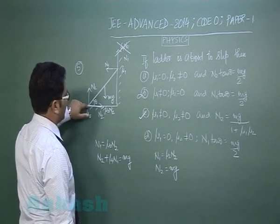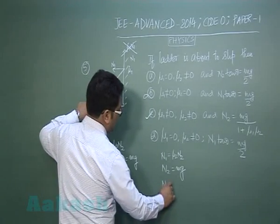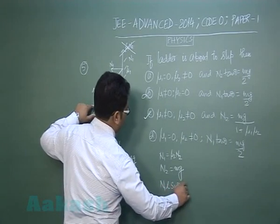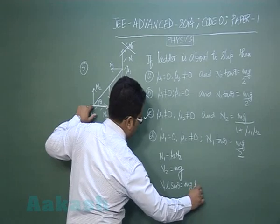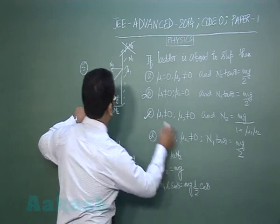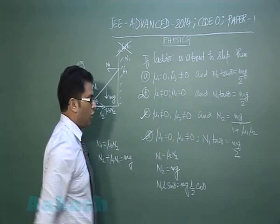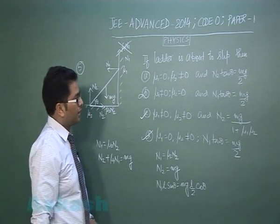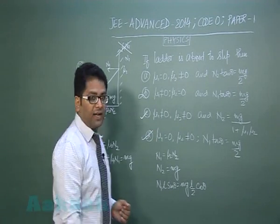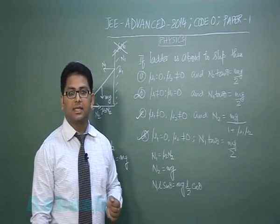And let us even use the rotational equilibrium. I can write torque about any point, so let me write it here. So that will give me n1 l sin theta is mg l by 2 cos theta, writing torque about this point, very straightforward. And this will lead to option number D. So that was about question number five, let us move to question number six.